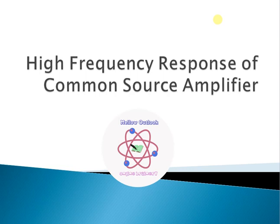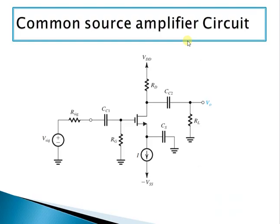Welcome to the tutorial on high frequency response of the common source amplifier. To determine the gain or transfer function at high frequencies, we consider the common source amplifier circuit and replace it with its high frequency model. The capacitors CC1, CC2 (coupling capacitors) and CS (bypass capacitor) will act like a short circuit when we consider the high frequency model.